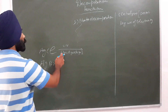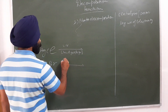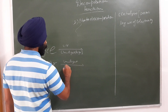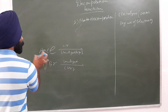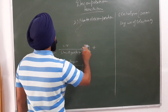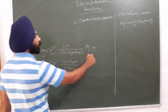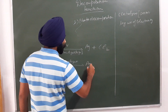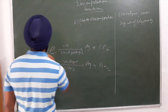When exposed to sunlight or UV light, silver chloride decomposes to give silver (Ag) and chlorine gas (Cl2). Silver bromide similarly gives silver and bromine gas (Br2). The equations need to be balanced with a coefficient of 2.